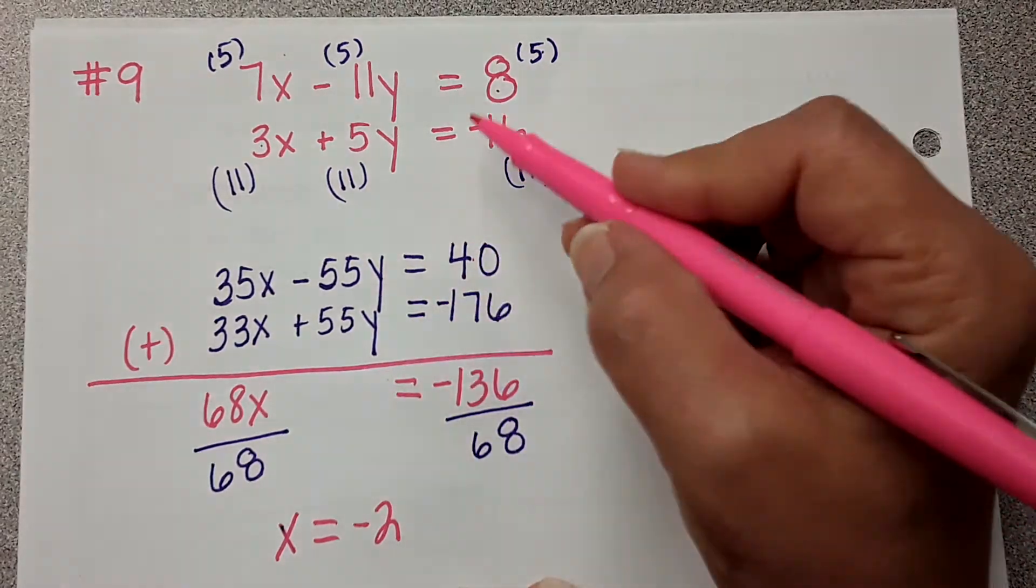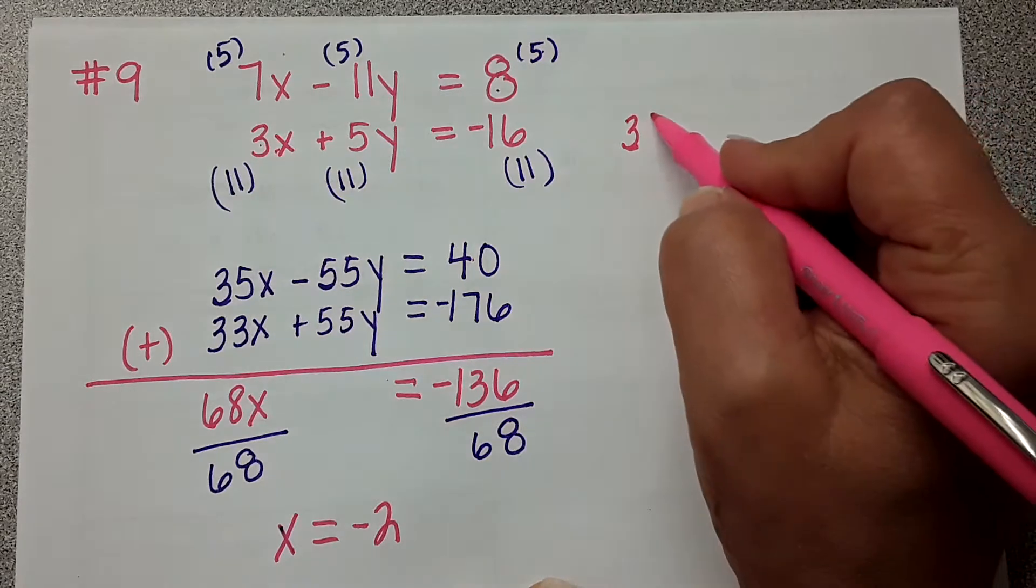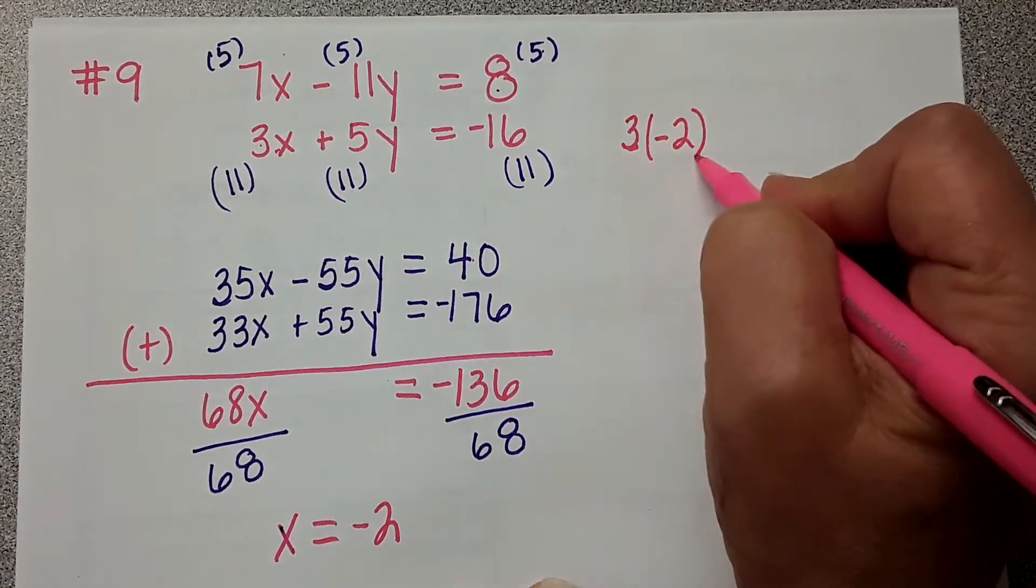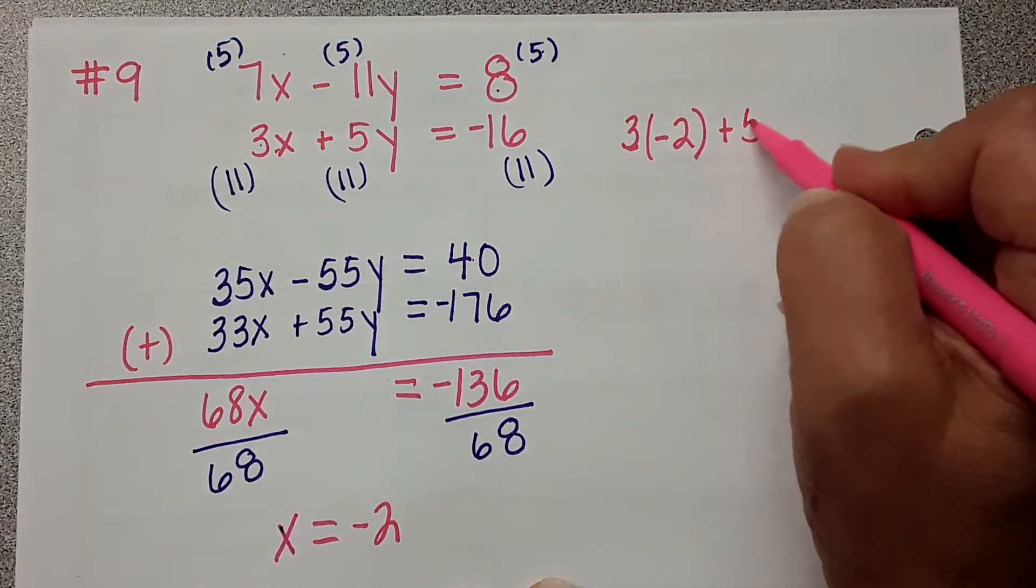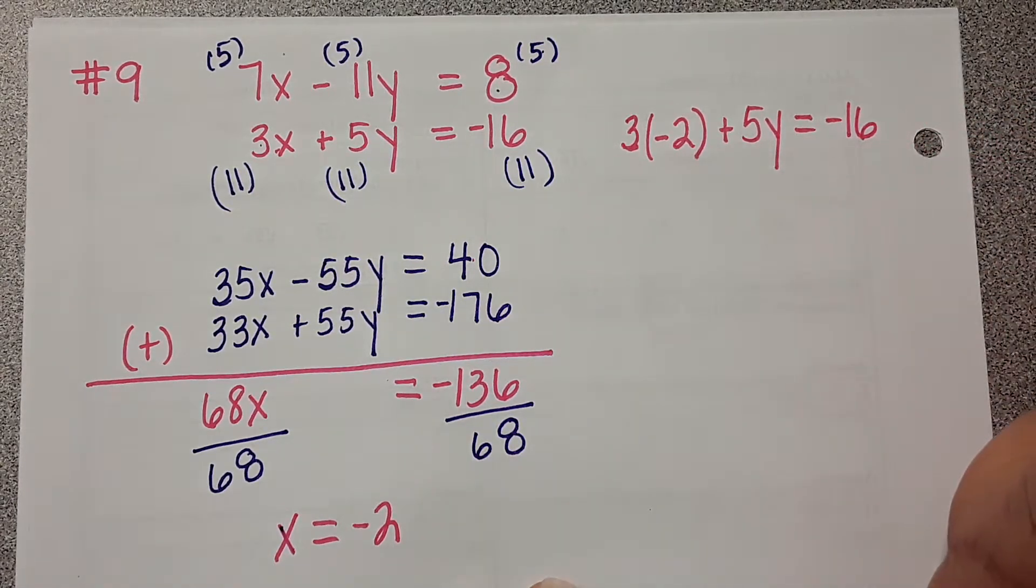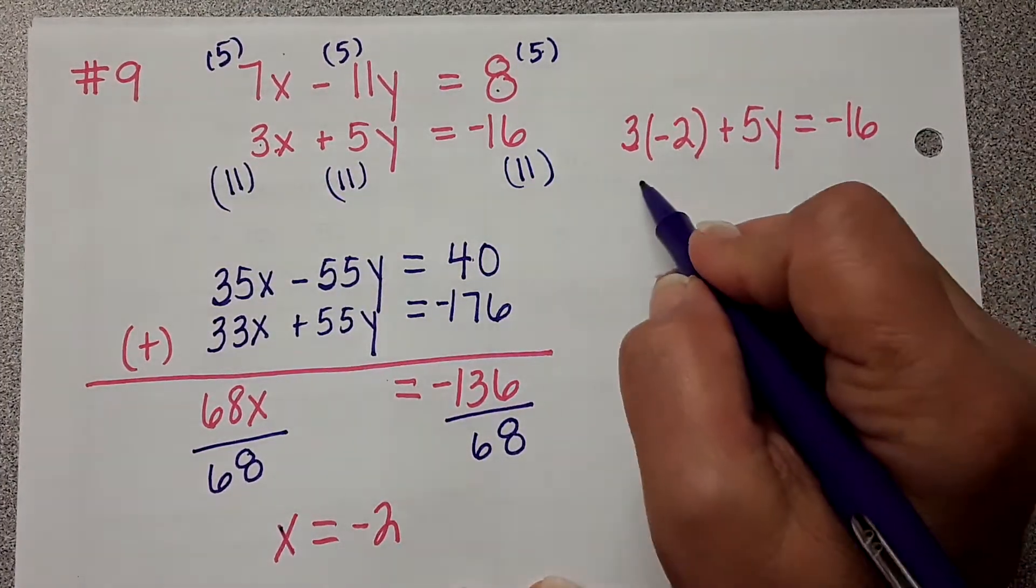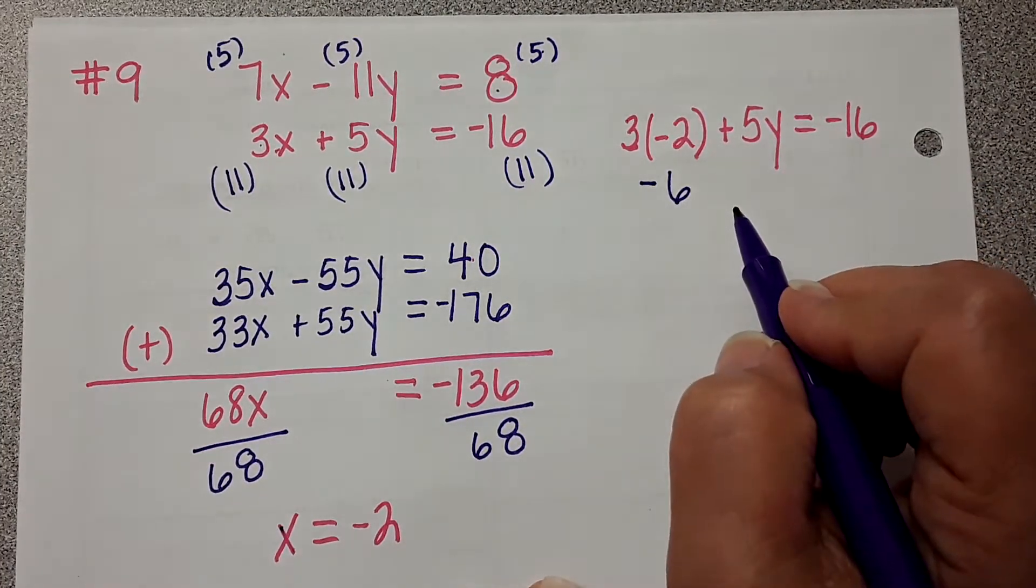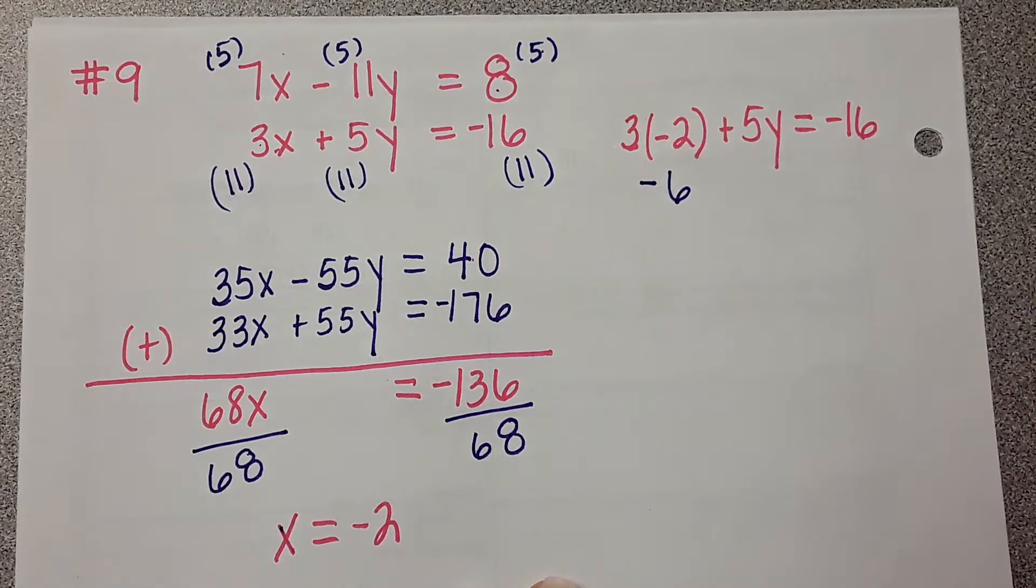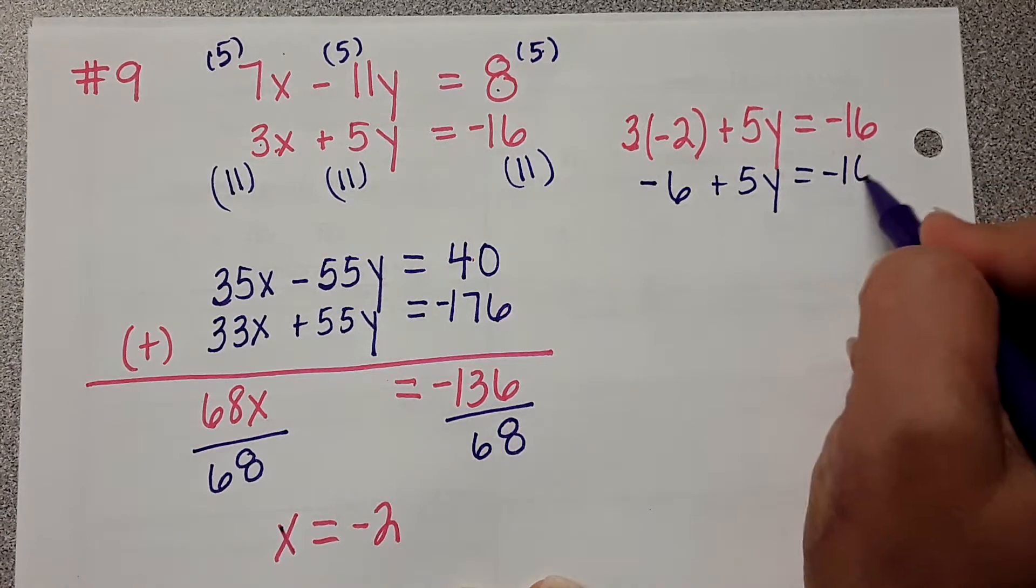So we're going to take negative 2 and plug it into the second one. I'm going to write 3. Instead of writing x, I'm going to write negative 2 plus 5y equals negative 16. This becomes negative 6 plus 5y equals negative 16.